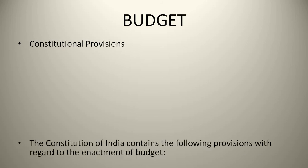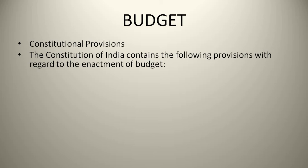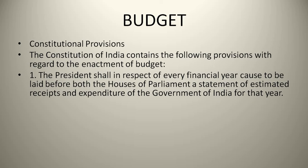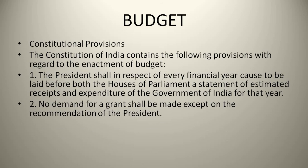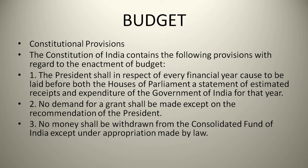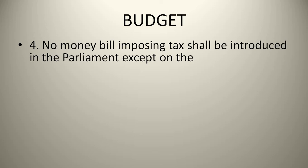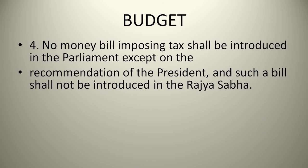Constitutional Provisions: The Constitution of India contains the following provisions with regard to the enactment of Budget. The President shall, in respect of every financial year, cause to be laid before both the Houses of Parliament a statement of estimated receipt and expenditure of the Government of India for that year. No demand for a grant shall be made except on the recommendation of the President. No money shall be withdrawn from the Consolidated Fund of India except under appropriation made by law. No money bill imposing tax shall be introduced in Parliament except on the recommendation of the President, and such a bill shall not be introduced in the Rajya Sabha.